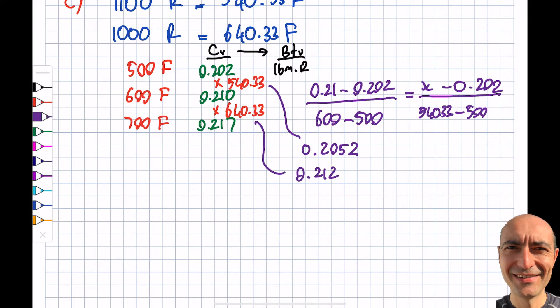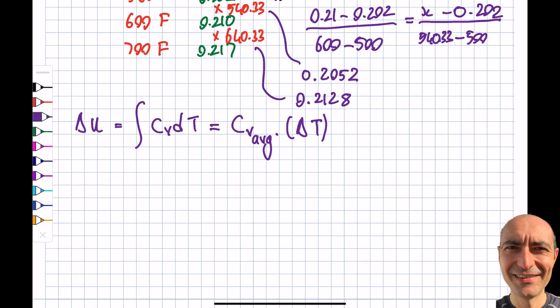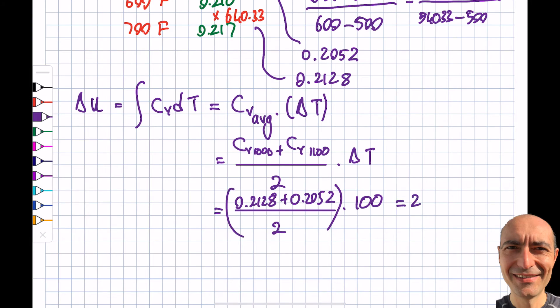Then I look at my notes. Because it's not constant, what I do is delta u is cv dt. Now what I will do is I will take the average of these two values. This cv average times delta T. Cv average will be calculated as cv at 1000 plus cv at 1100 divided by 2 times delta T. If I do that, I put the numbers in: 0.2128 plus 0.2052 divided by 2 times 100. Delta T in terms of Rankine, I get 100. I get 20.9 BTU per pound mass.